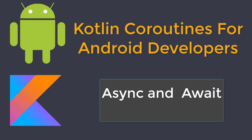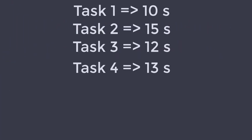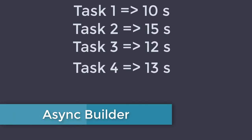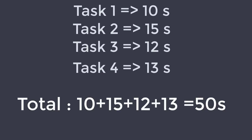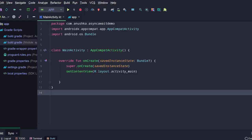Let's assume we have to get results from 4 online data sources and combine them to show the final result. The first task takes 10 seconds, second takes 15 seconds, third takes 12 seconds, and the fourth takes 13 seconds. If we download these data sets one by one, the user has to wait at least 50 seconds — that's too much. What if we can download all this data in parallel? Writing code to download in parallel and combine the results at the end is called Parallel Decomposition. With Kotlin coroutines, we can do Parallel Decomposition very easily.